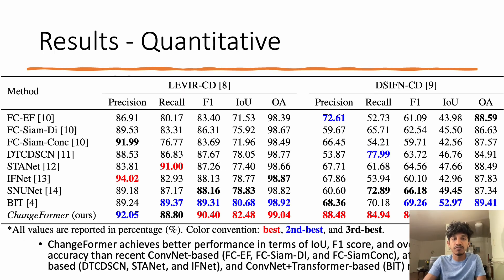Here we present the results of different change detection methods on test sets of both datasets. As can be seen from the table, the proposed Changeformer network achieved better change detection performance in terms of F1, IoU, and OA metrics.